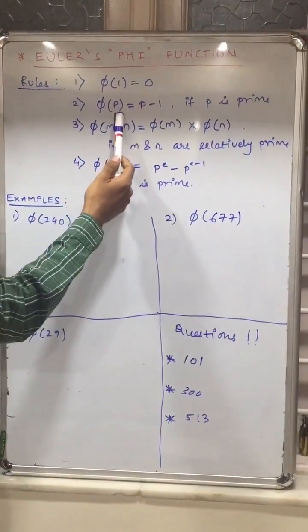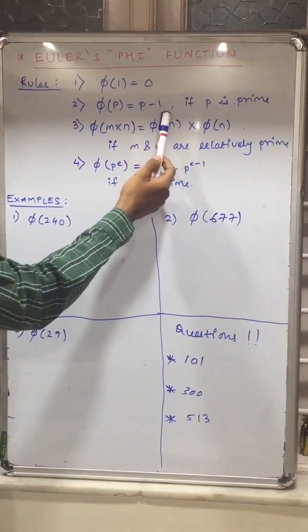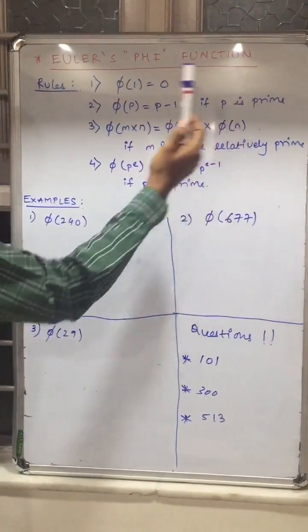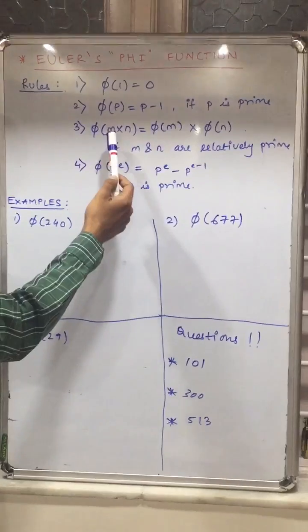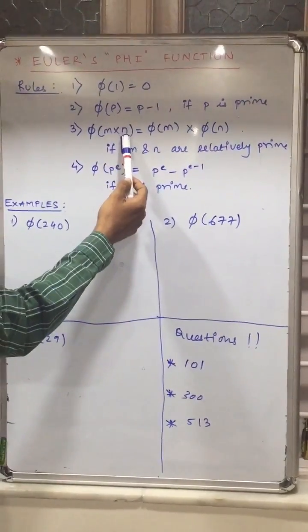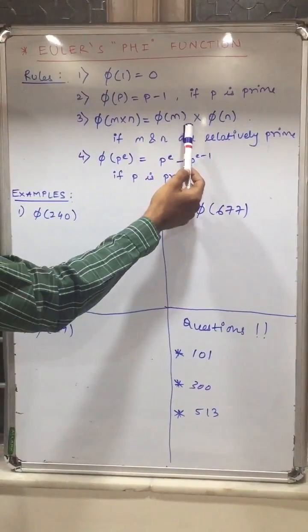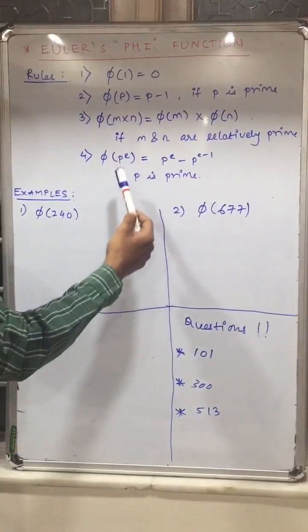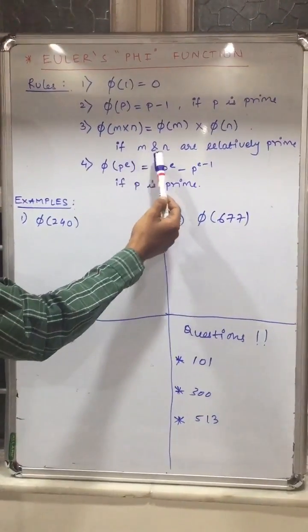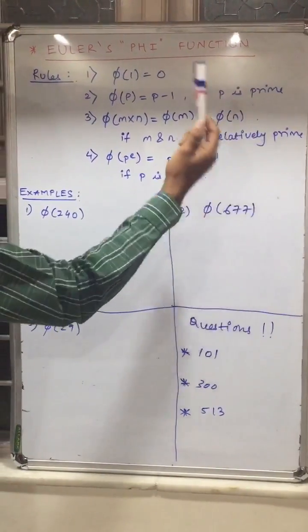Third, phi of m cross n is phi of m into phi of n. Here, m and n are relatively prime.